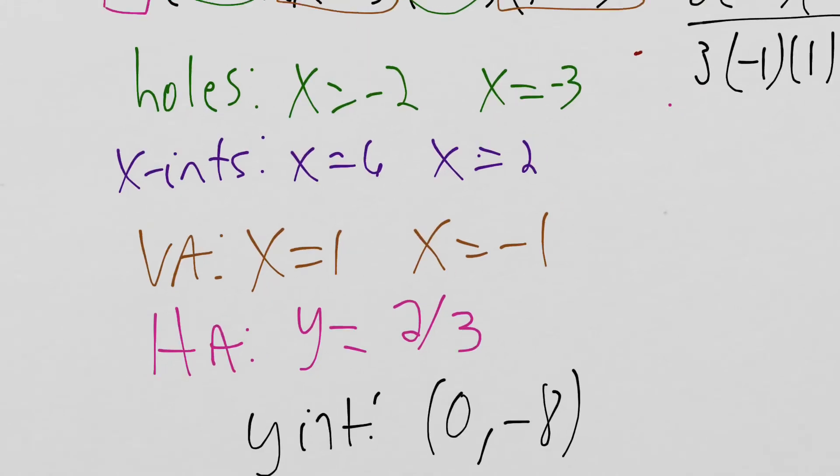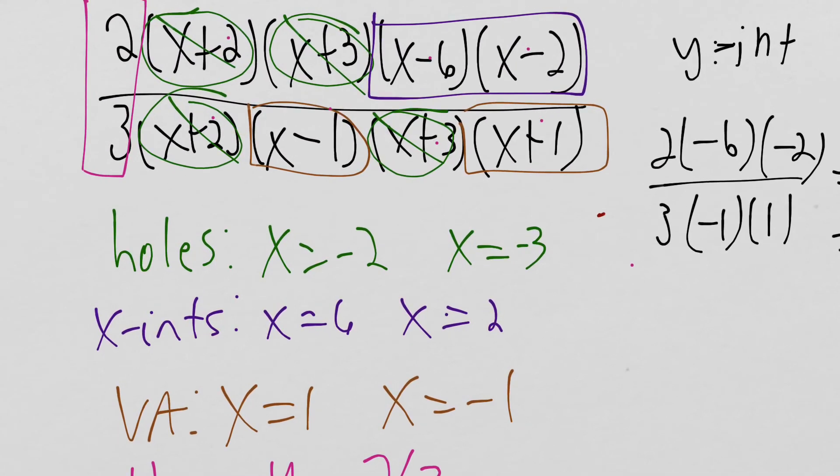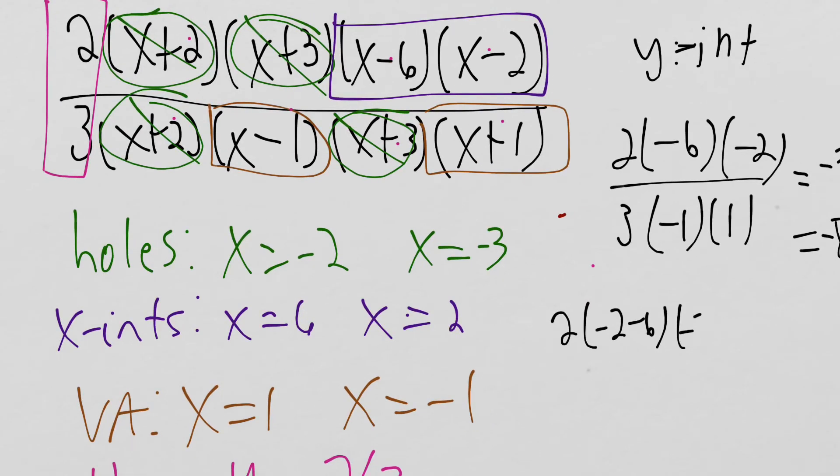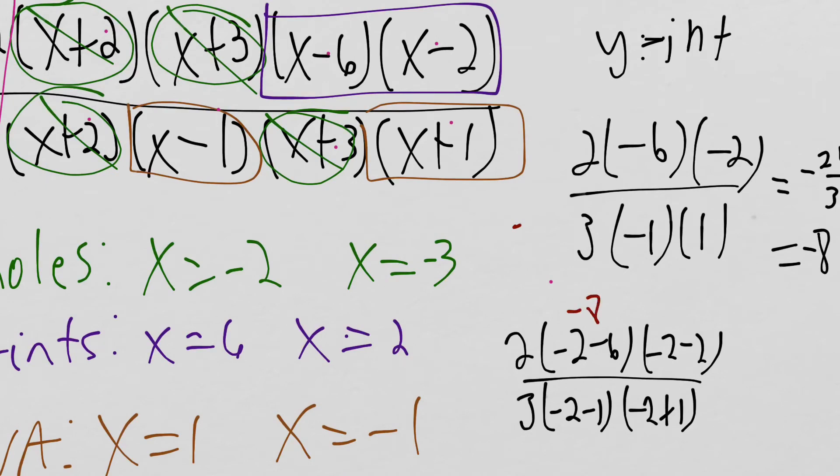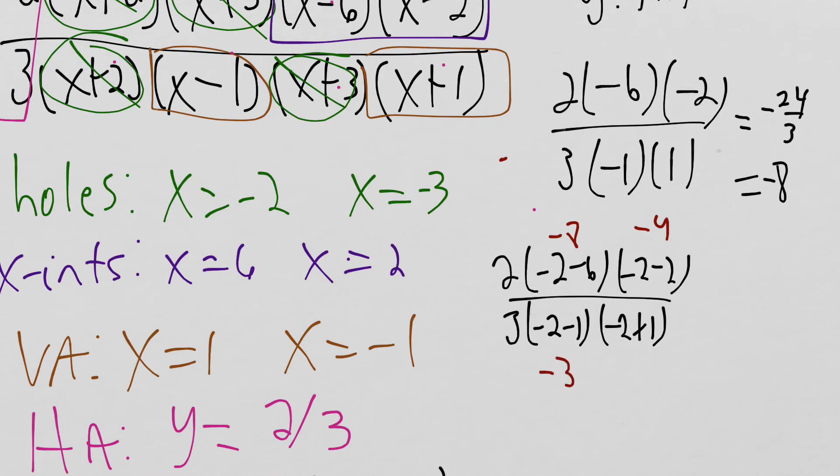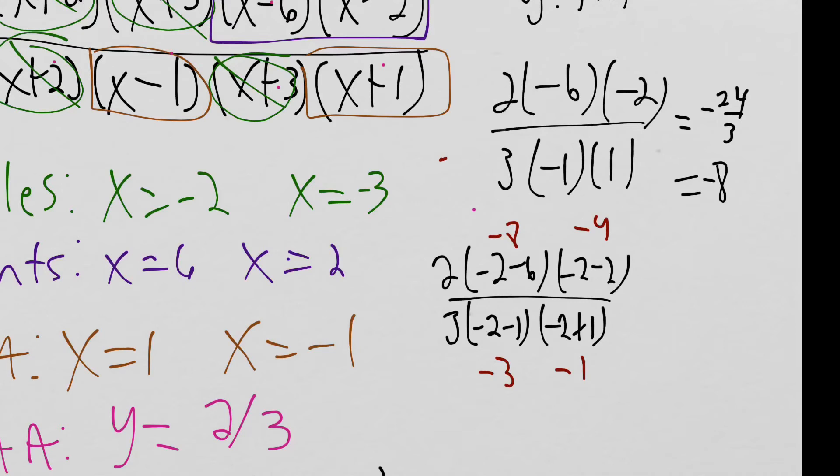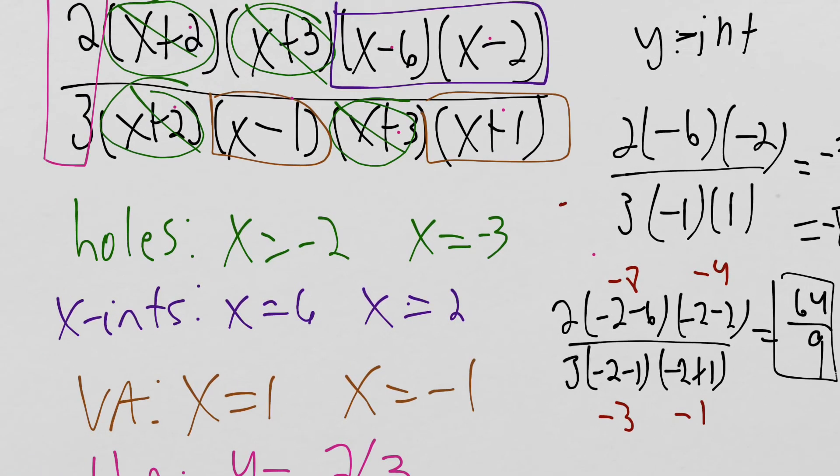So the only thing we need to put in now is our holes, and I guess we should figure out the y value of those holes. So we need to plug in negative 2. So we get 2 times negative 2 minus 6 times negative 2 minus 2 over 3 times negative 2 minus 1 times negative 2 plus 1. So what do we get? We get 2 times negative 8 times negative 4, and we get 3 times negative 3 times negative 1. So if we do that math out, we should get 64 over 9. The negatives cancel positive, so it's 64 ninths. So for x equals negative 2, the y value is 64 over 9.